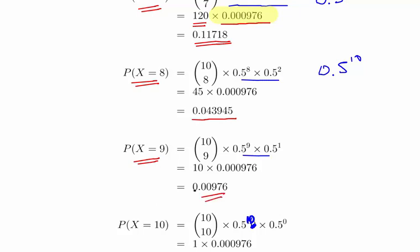So we have to do for each of these three. 0.00976, so it is 0.043945. X equal to 9 is 0.00976. X equal to 10.